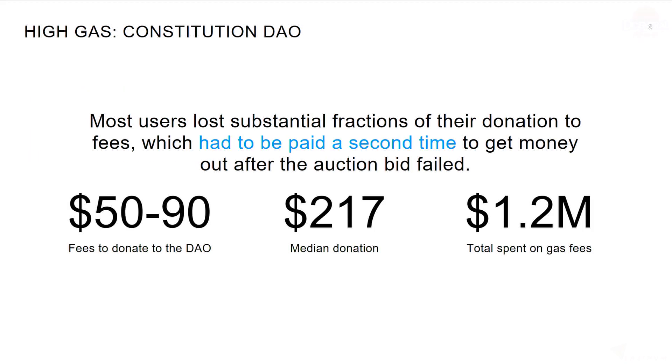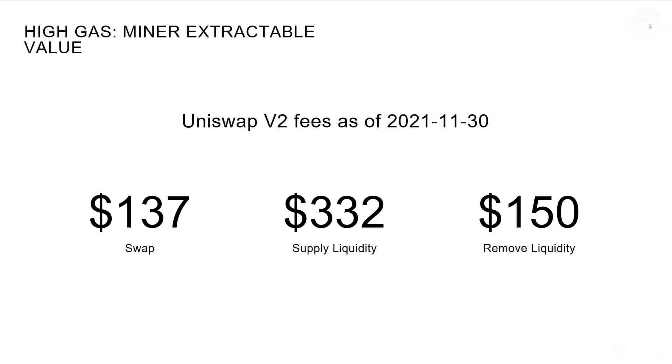The first example is Constitution DAO. Just recently, a DAO had a crowd-sourced effort to buy the Constitution from Sotheby's. They raised over $40 million. The median donation was $217, but it cost $50 to $90 in fees for everyone who donated. They failed to buy it. Someone else outbid them. And then if you wanted to get your money out, you had to pay those $50 to $90 fees again, which just completely wiped some people out.